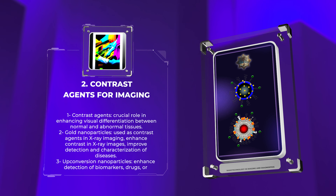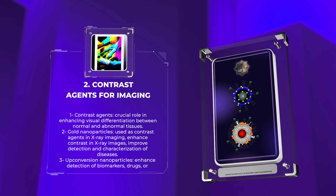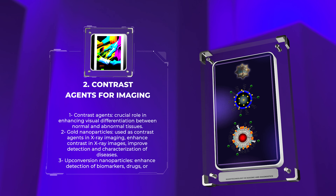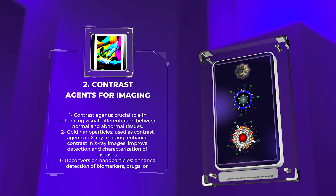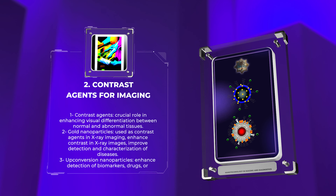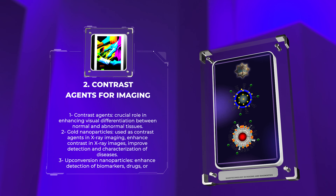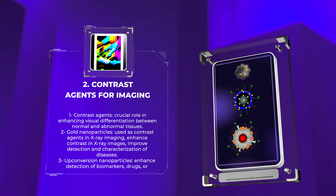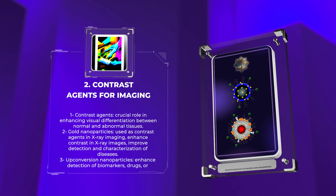Nanotechnology has provided innovative solutions in the development of new contrast agents with superior properties. One remarkable example is the utilization of gold nanoparticles as contrast agents in x-ray imaging. Gold possesses excellent x-ray absorption properties, and by engineering nanoparticles with a specific size and shape, their light scattering or absorption can be tailored to enhance the contrast in x-ray images. These gold nanoparticles, when targeted to specific tissues or tumors, can significantly improve the detection and characterization of diseases. Another promising class of contrast agents is based on upconversion nanoparticles, UCNPs. These nanoparticles are excited by near-infrared light, converting it into higher-energy visible light. This unique property allows for deep tissue imaging and eliminates the background autofluorescence, resulting in improved sensitivity and specificity of imaging.